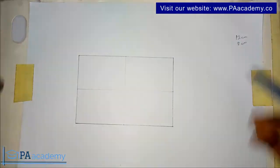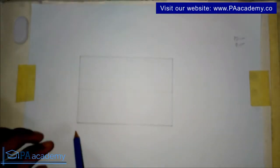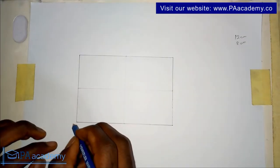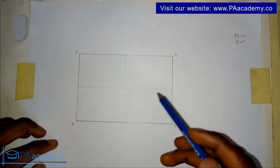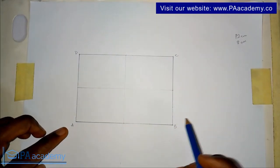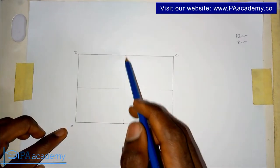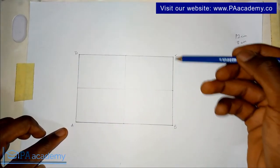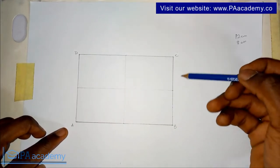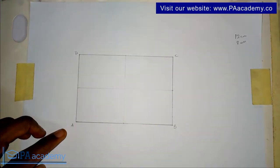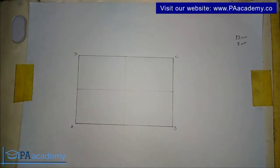To save time, I've gone ahead and drawn the rectangle. I want you to also draw your own rectangle, then draw your minor axis which is through the center. Let me call the corners of this rectangle A, B, C, and D. AB is 12 centimeters, so the center is 6 centimeters. The same thing for DC — 6 centimeters. CB is 8 centimeters, so the middle is 4 centimeters. Join them together.